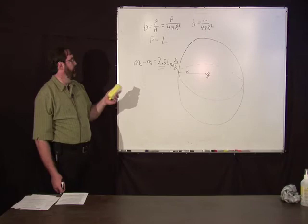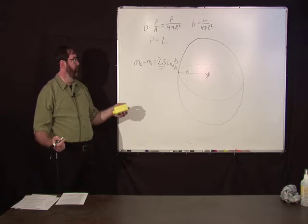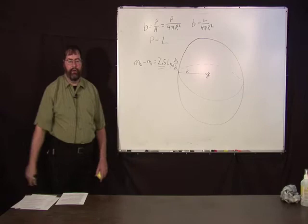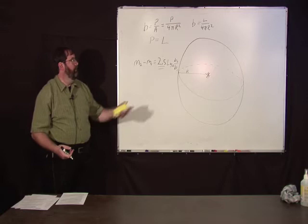If we know, for instance, through parallax measurements, the distance to the star, we can figure out from this equation, we can figure out what the luminosity of the star is. How much power, how much energy per unit second is being radiated by the star using that equation.